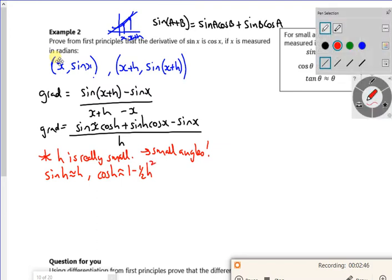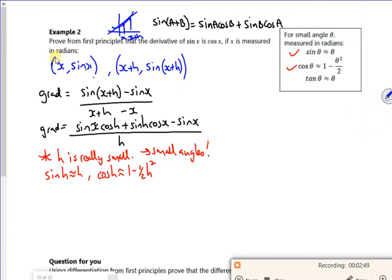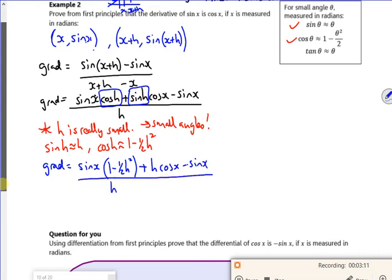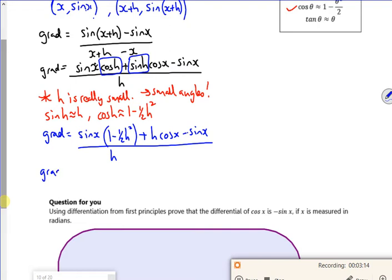From my, it's actually there isn't it, but there and there. Let's change that. So now, my gradient is sin x times 1 minus 1 half of h squared. Because I'm changing that cos h plus sin h becomes a h times cos x minus sin x over h. If I expand that top line, I get sin x minus 1 half of h squared sin x plus h cos x minus sin x all over h.